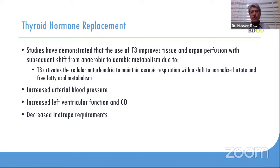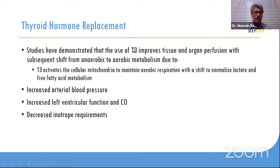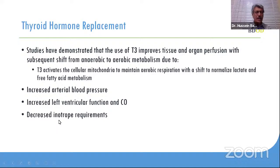The different types of studies produced somewhat different results, but in general, studies have shown that if we use T4 or T3, we improve tissue and organ perfusion and therefore decrease anaerobic metabolism, shifting cellular respiration back to aerobic. Thyroxin is involved in this process. There are also studies showing T4 and T3 increasing blood pressure, decreasing vascular collapse, improving left ventricular function, and decreasing inotrope requirements in those donors.